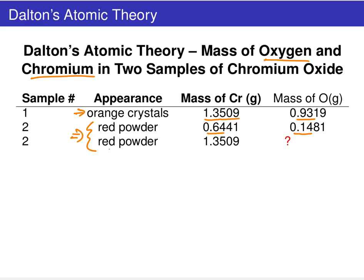The type of thing Dalton would try to predict and then verify by experiment is: given that we know we have 1.35 grams of chromium and that it's the same red powder, can we predict what the mass of oxygen will be?